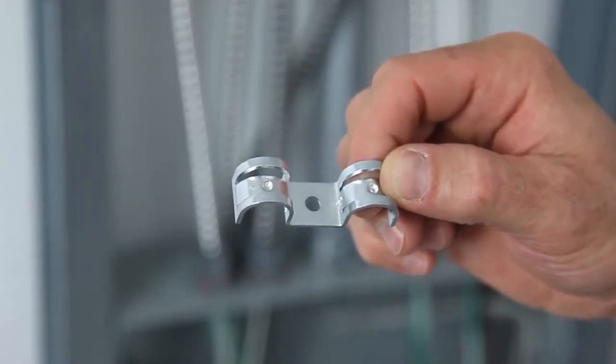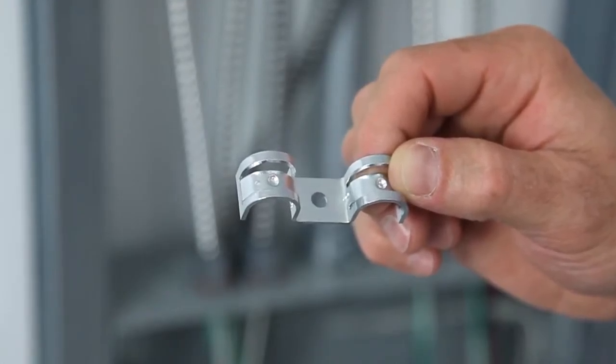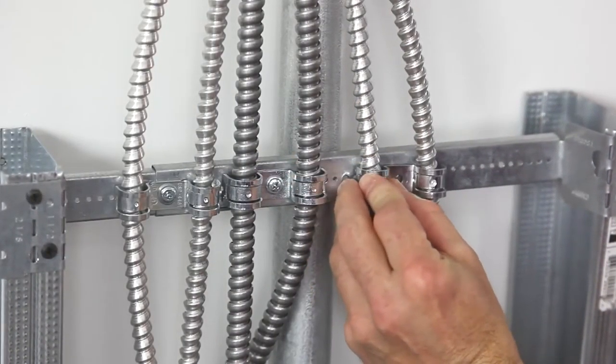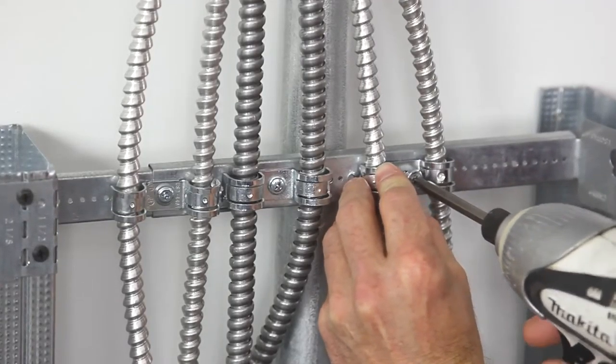The center mounting hole has a 0.210 inches diameter. To install, position the duplex connector over the two cables and set the screw.